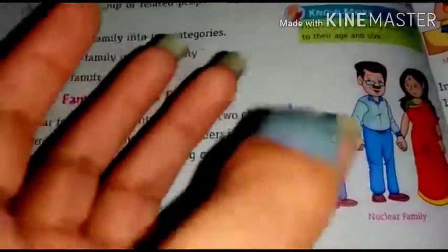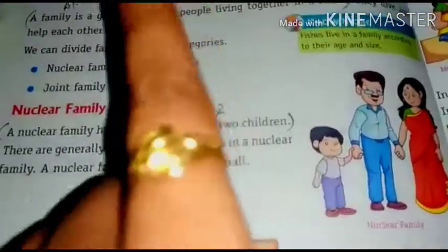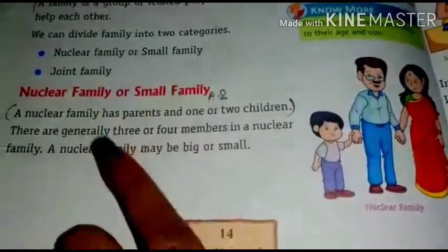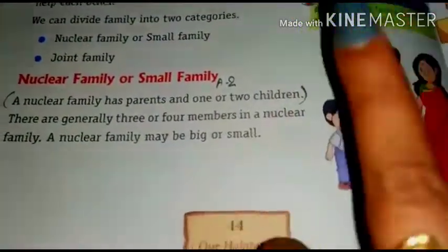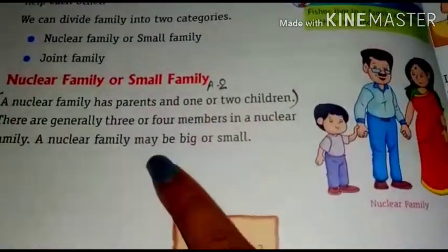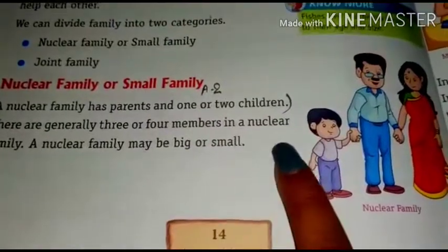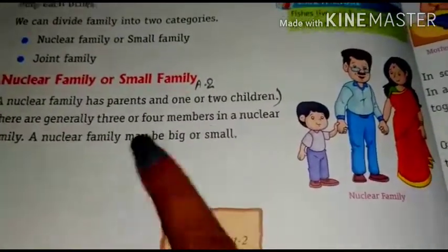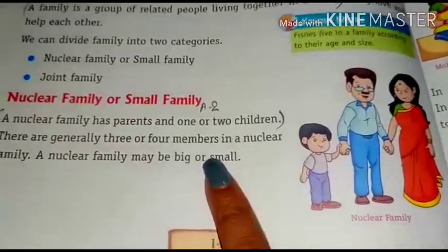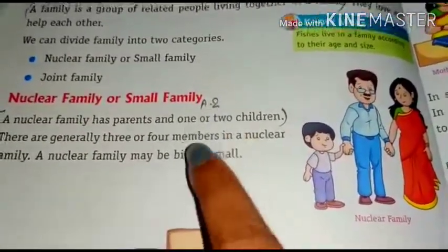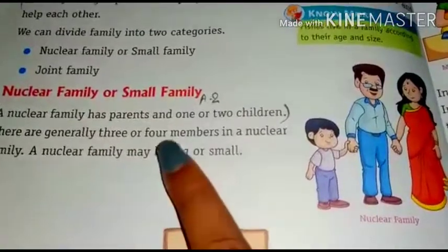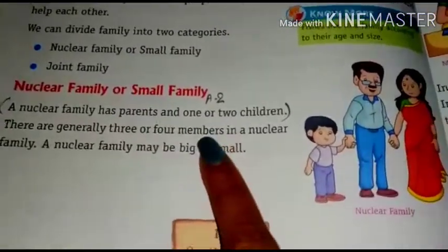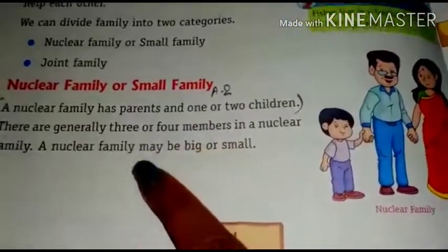How three or four members? Your father, your mother, you, and your brother or your sister — so three or four members in a nuclear family. A nuclear family may be big or small. Small would be just you, your mother and your father. Big would be you, your mother, your father, as well as your brother or sister.